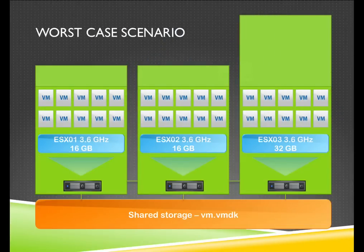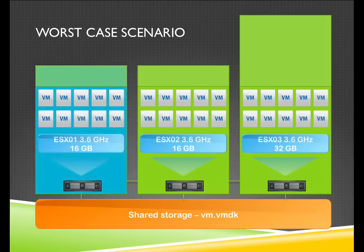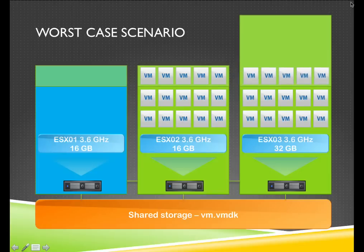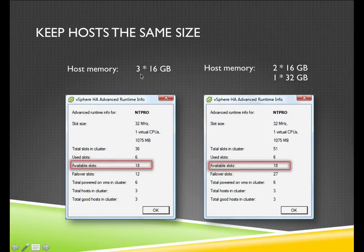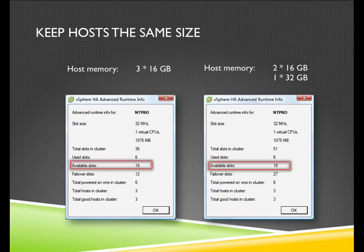Another thing I see at a lot of clients is that people run into a resource issue and add a new host to the cluster — a host with more memory or more CPU than the existing hosts. VMware HA only looks at the worst-case scenario. So if that bigger host goes down, the virtual machines are powered on the other ESX servers, but the extra space on the bigger host cannot be used to power on virtual machines if it's the one going down. Adding a big host into the cluster for HA is not a wise idea.